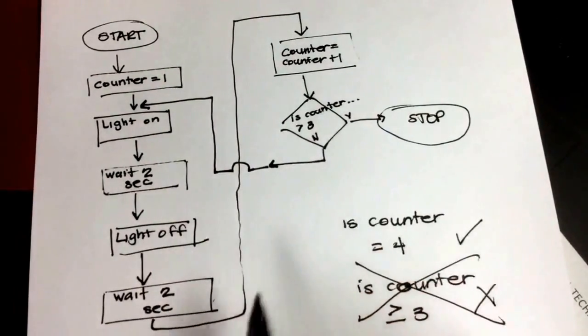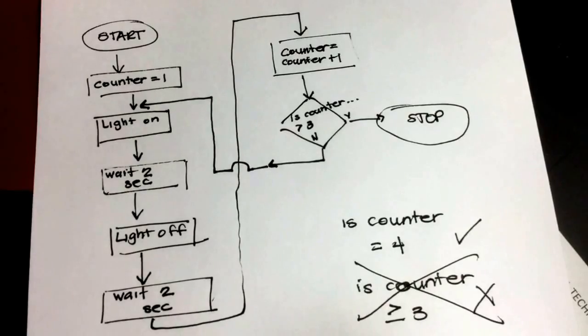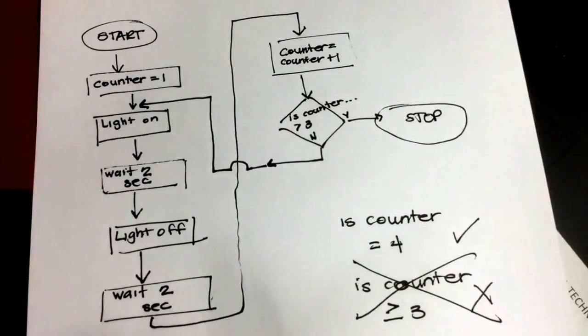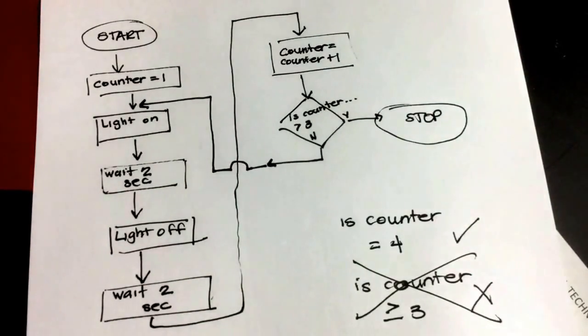And there's still more variations we could do to this. So I hope this helps you a little bit in understanding writing a flowchart, creating an algorithm, and then adding a counter to it.